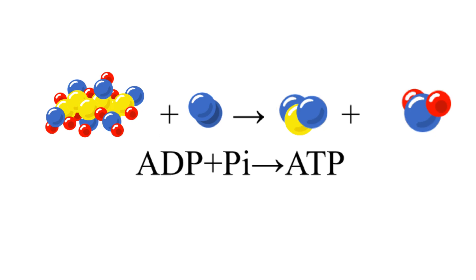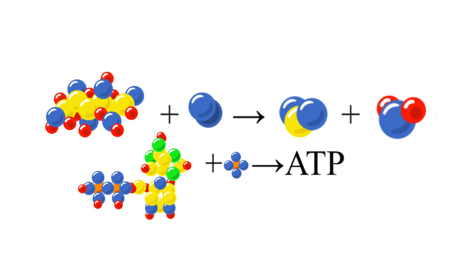60% of this energy will later be used to fuel the second equation, turning an ADP and a phosphate group into an ATP molecule. This is a synthesis reaction.